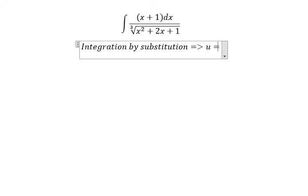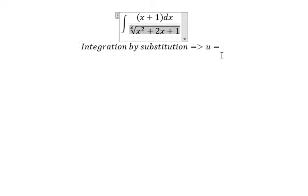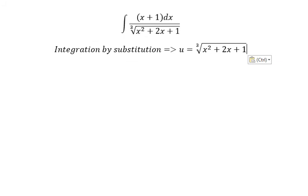So we put u equal to the cubic root, and we put u³ equal to x²+2x+1.